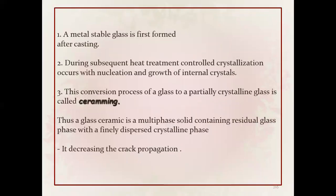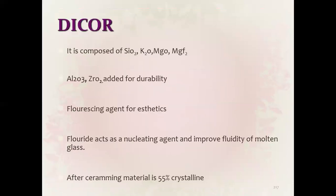Castable glass or glass ceramics: a metastable glass is first formed after casting; during subsequent heat treatment, controlled crystallization occurs with creation and growth of internal crystals. This conversion of glass to partially crystalline glass-ceramic is a multi-phase solid containing the natural glass phase with finely disposed crystalline phase, decreasing crack propagation. Example: Dicor — contains silicate, potassium, magnesium oxide, magnesium fluoride, aluminum oxide, and zirconium oxide for durability, plus a fluorescing agent for aesthetics. Fluoride acts as a nucleating agent and improves the fluidity of the molten glass.